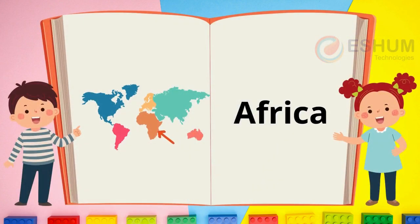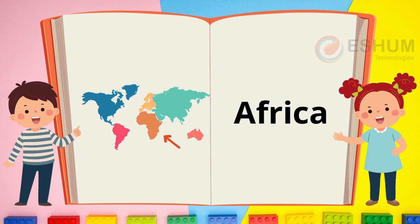Words. Africa. In the picture you see a map. The part in orange is Africa. Many wild animals live in Africa — some of them are elephants, lions, hippos, giraffes, and rhinos.